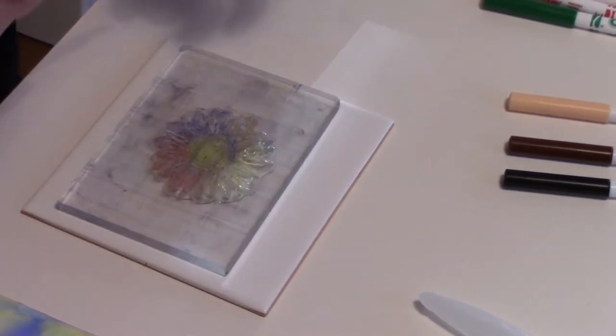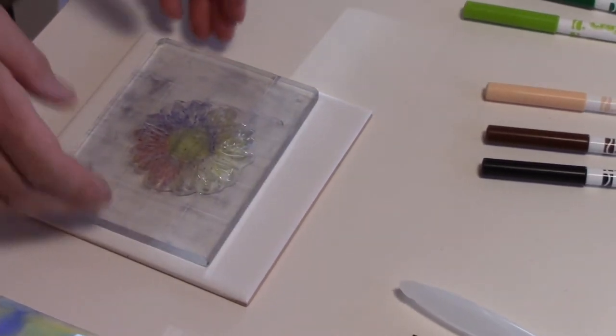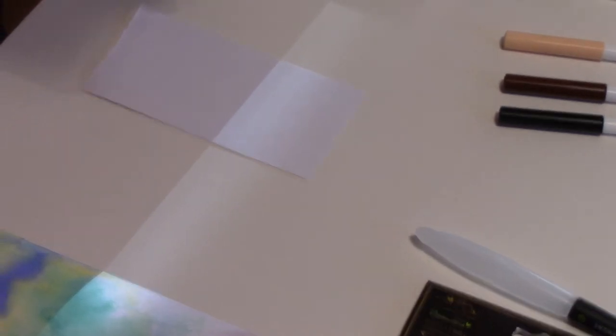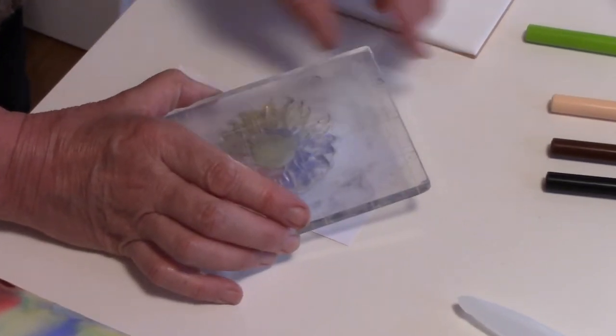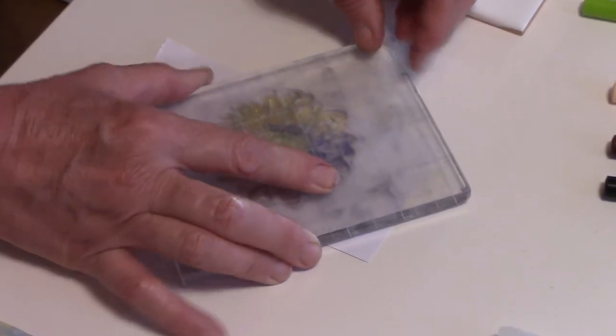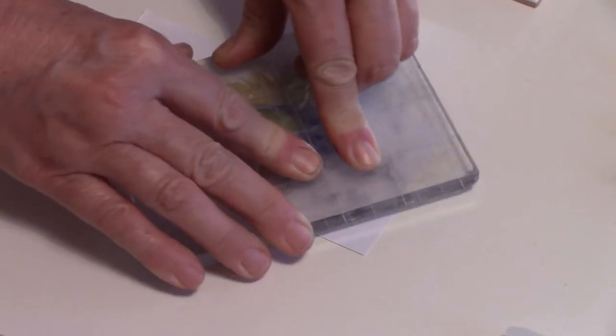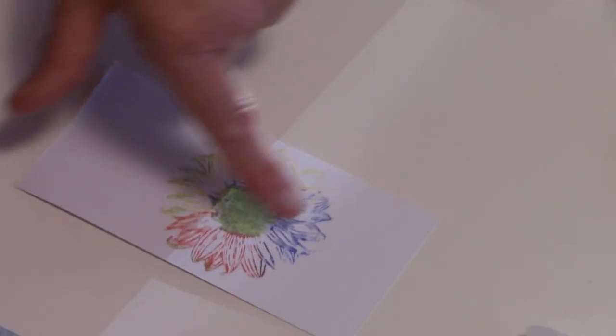So again I'm using these now as an ink pad. I can see where I've missed it with the marker but it doesn't matter, it's just to show you you can use it. So you can see where I've missed it but even the yellow has come out, so we can use them as inks for stamping.